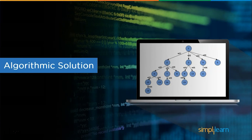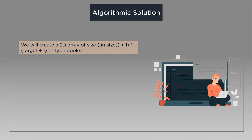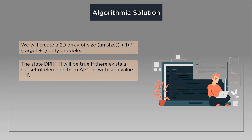Let's discuss the algorithmic solution to the subset sum problem. First, we will create a 2D array of size ArrSize plus 1 multiplied by target plus 1 of type Boolean. The state dp[i][j] will be true if there exists a subset of elements from index 0 to i with a sum value equal to j.